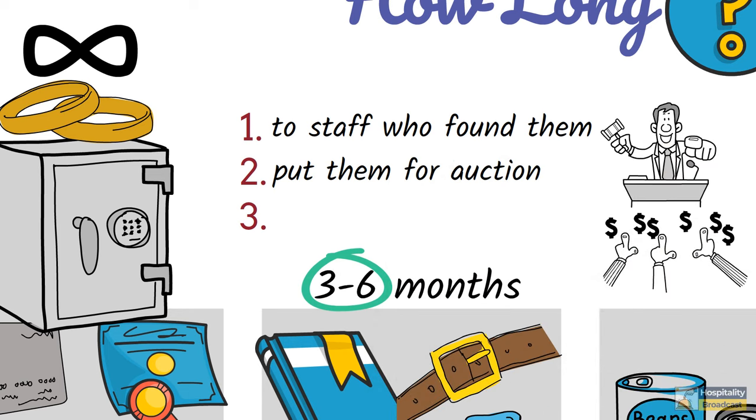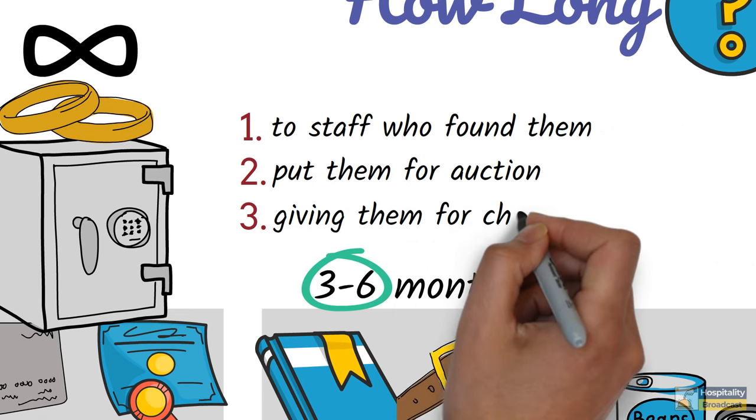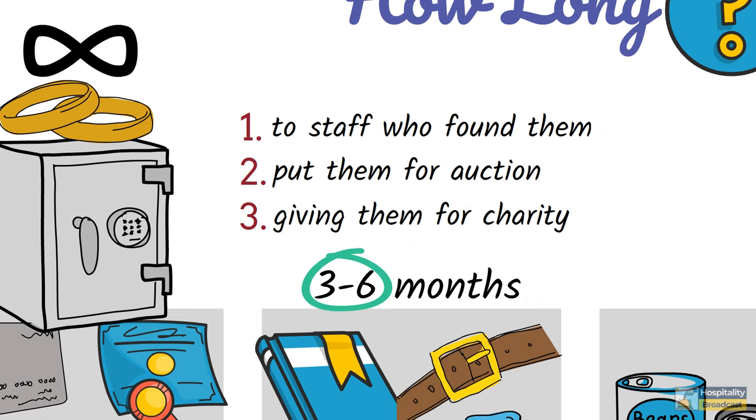Second is to put them for auction for the hotel employees. Whoever bids higher will get that item. This method is not so much common these days. And the third is giving them for charity to any NGO. Mostly the clothes and books are given for charity.